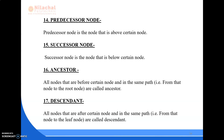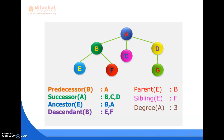Next comes the terms predecessor, successor, ancestor, and descendant. The predecessor node is the node that is above a certain node. The successor node is the node that is below a certain node. An ancestor includes all nodes that are before a certain node on the same path from that node to the root. A descendant includes all nodes that are after a certain node on the same path from that node to a leaf node.